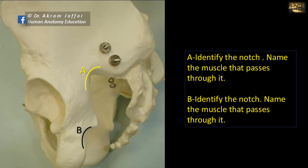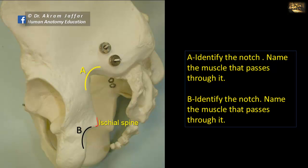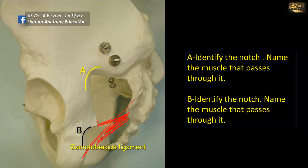Identify the notch and name the muscle that passes through it. Notch A is the greater sciatic notch, and notch B is the lesser sciatic notch. The boundary between the greater and lesser sciatic notch is the ischial spine. These notches are converted into foramina because of the presence of two ligaments — the sacrospinous and the sacrotuberous ligaments — forming the greater sciatic foramen and lesser sciatic foramen. The greater sciatic foramen is a gateway between the pelvis and the gluteal region, and the muscle that passes through it is the piriformis muscle. The lesser sciatic notch is a gateway between the perineum and the gluteal region, and the muscle that passes through it is the obturator internus muscle.